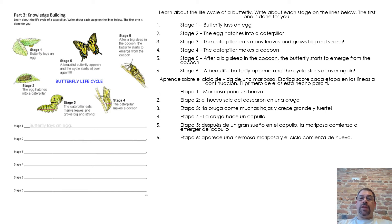Stage 1: Butterfly lays an egg. Stage 2: The egg hatches into a caterpillar. Stage 3: The caterpillar eats many leaves and grows big and strong. Stage 4: The caterpillar makes a cocoon.